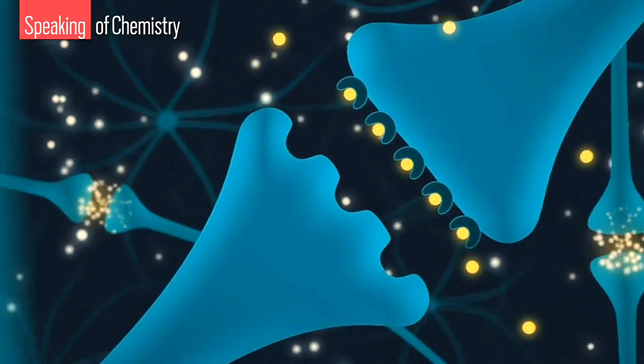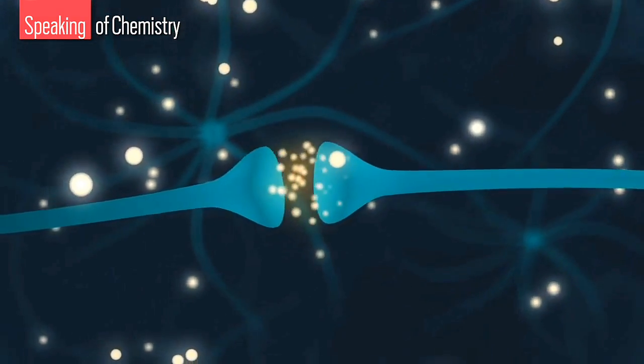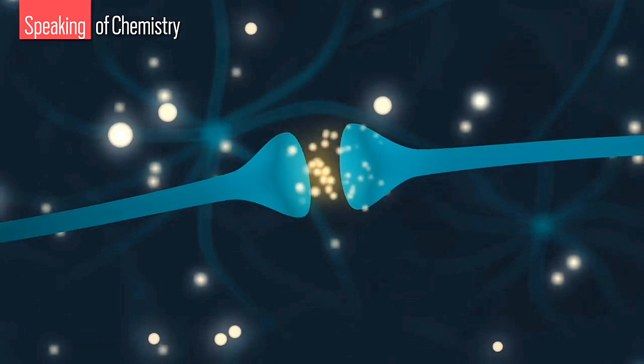And how exactly neurons respond to dopamine is still a mystery, one that's tough to solve because the responses are lightning fast and they occur in places scientists struggle to see.